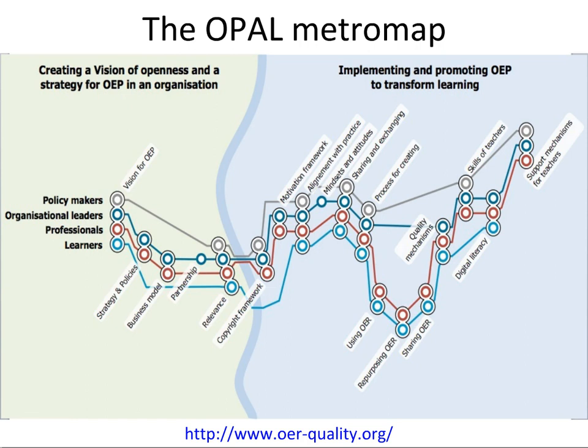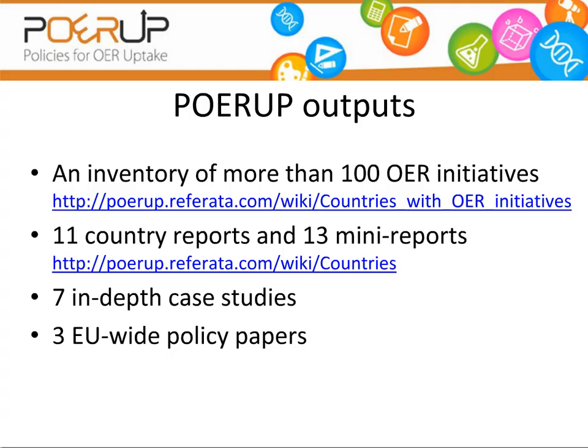The OPAL project came up with a rich set of practices of OER, which it translated into a set of guidelines for different stakeholders: learners, teachers or professionals, organizational leaders, and policymakers. This visual map shows the components of the guidelines, enabling institutions to look at strategies and policies for OER, starting with a vision for open educational practice, moving through to an implementation plan to promote the use of OER across institutions, including what kind of skills teachers need and what support mechanisms are available.